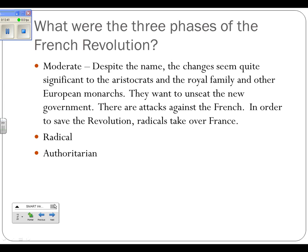Some of the radicals blame certain aristocrats for supporting other countries attacking France. Think about this — these rich guys are saying to other countries, come in and help take over our country because we want to save our position. If you're a French commoner and you find out that these rich guys are helping the Germans or Austrians or Spanish try to take your country over, you're angry. And it will usher in the radical phase. The third phase will be the authoritarian phase.